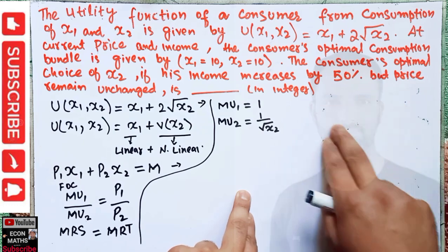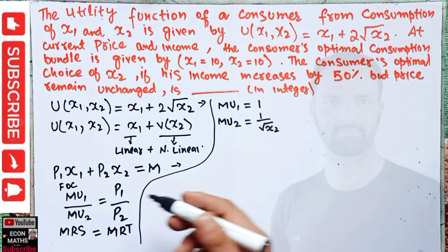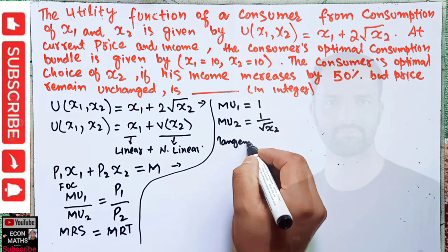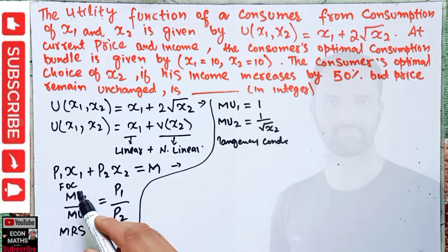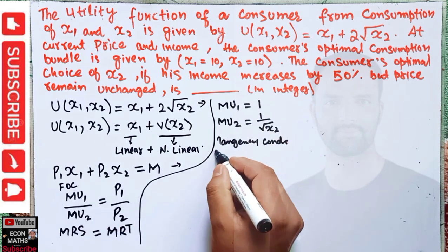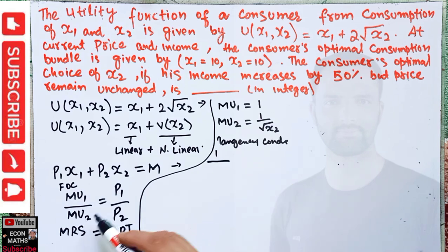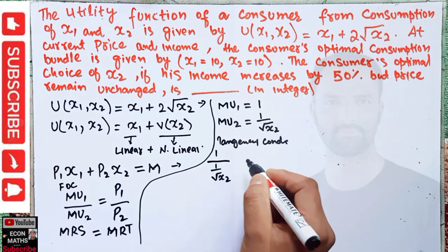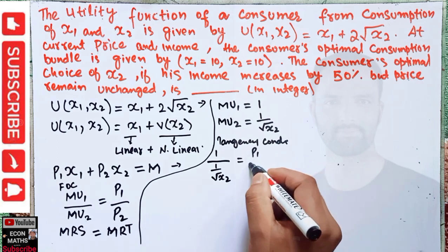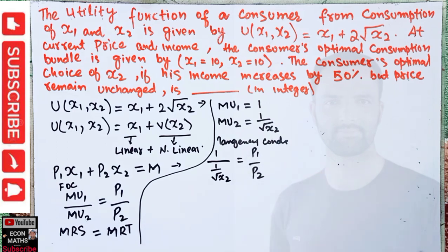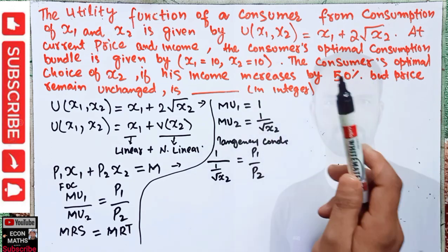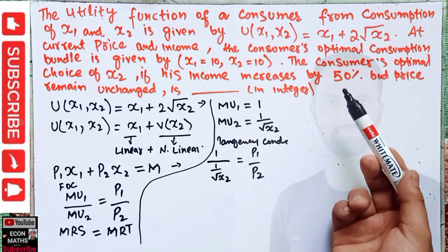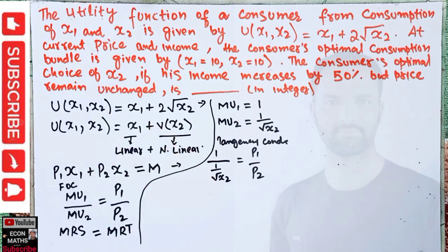Applying the tangency condition: MU(x1) / MU(x2) = p1 / p2, which gives 1 / (1/√x2) = p1 / p2, so √x2 = p1 / p2. We are deriving the demand function for x2 because the question asks about the change in the optimal choice of x2.